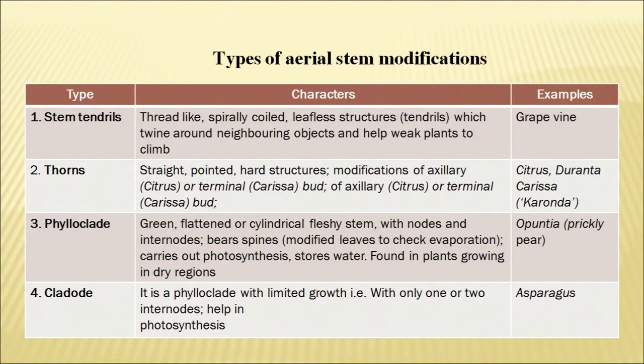Aerial modifications include tendrils, thorns, phylloclades and cladodes. Stem tendrils are thin rope-like structures that wind around wires or supporting trees and help weak-stemmed plants stand erect, letting the leaves perform the function of photosynthesis.